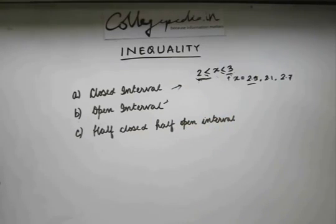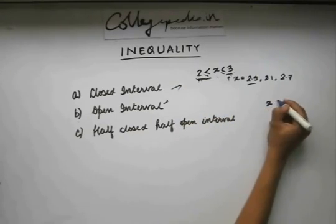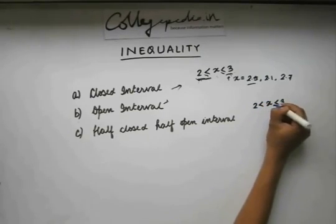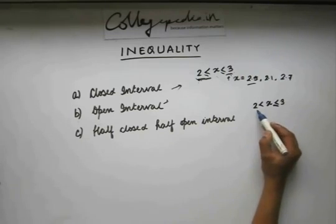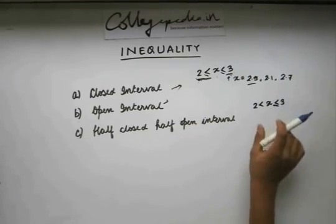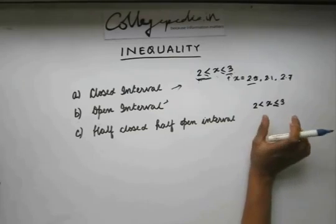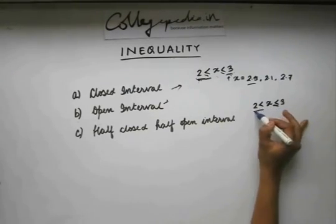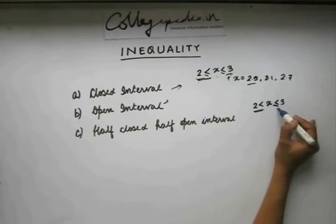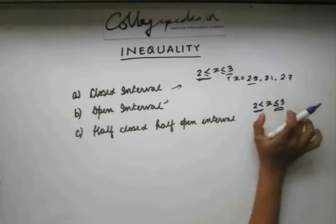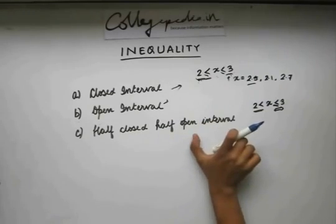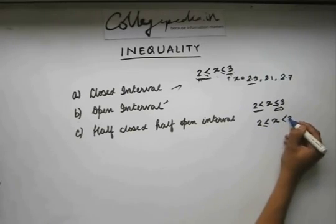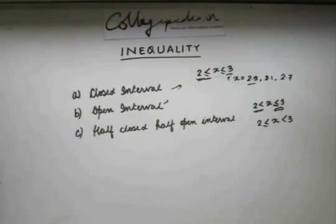Now there can be cases where x is greater than 2 and less than or equal to 3. This is what a half closed half open interval is — the interval is open on one side and closed on the other. Here it is open at the lower point and closed at the upper point. Another example could be where x is greater than or equal to 2 and less than 3, which is also a half closed half open interval.